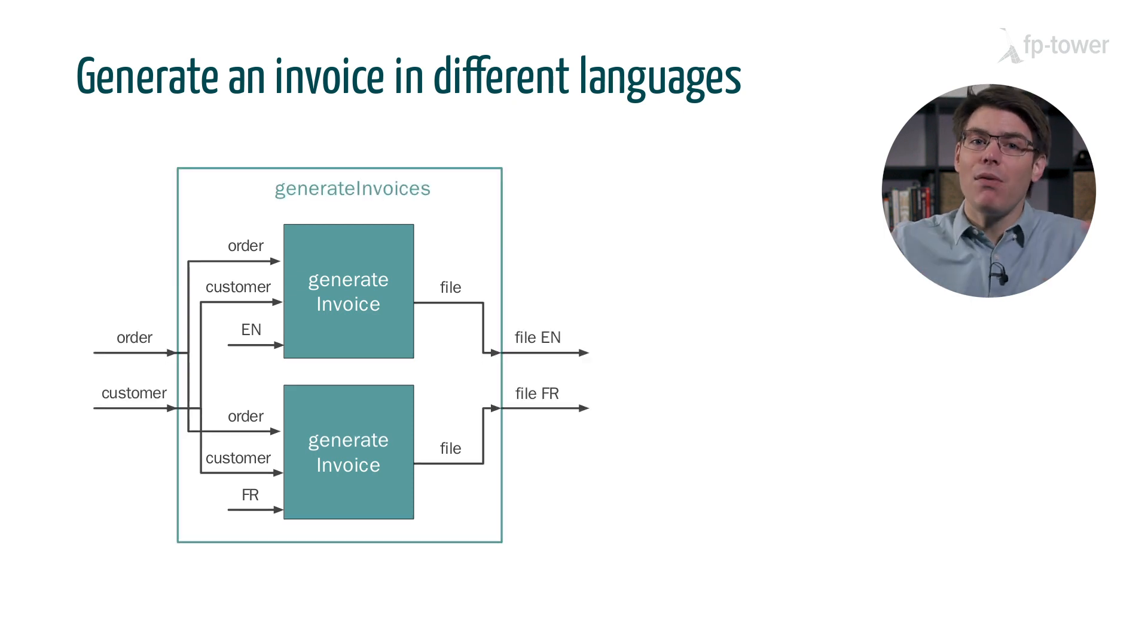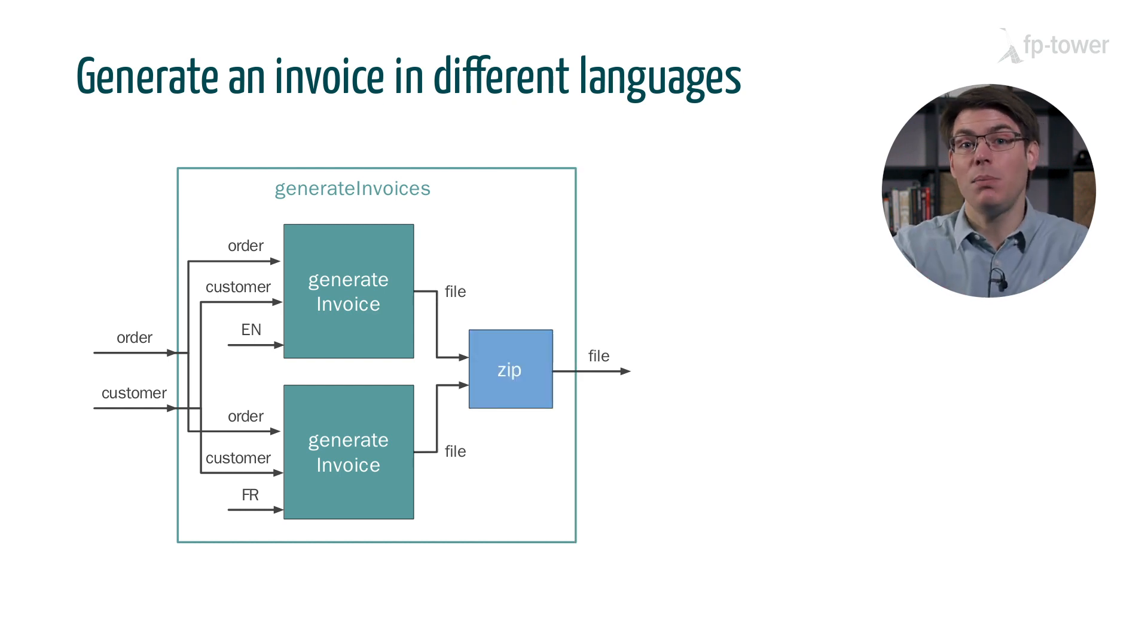Next we'll wrap everything into a new function generate invoices, plural, which takes an order and a customer and dispatches these arguments to the two internal functions. This will give us two files: one in English and one in French. We can either put both files together into a tuple or case classes, or we can add an extra zip operation at the end and return a single file. Either approach is suitable depending on the business case.